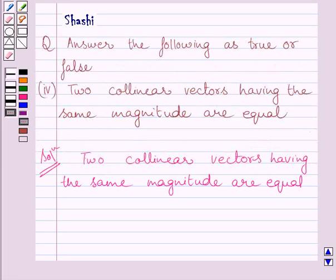So by the definition of equal vectors, we get they have the same magnitude as well as same direction. But two collinear vectors having same magnitude may not have same direction. And vectors having same magnitude but different direction are not equal. So this statement is false.